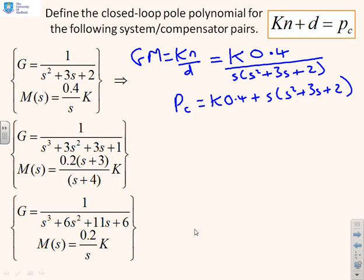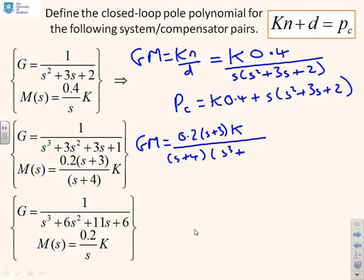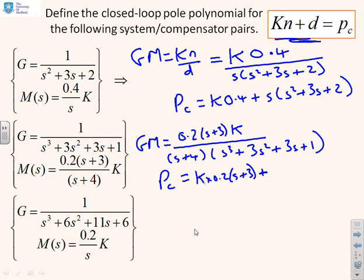If I do the same thing here, I can write GM equals 0.2(s plus 3)K over (s plus 4) into (s cubed plus 3s squared plus 3s plus 1). Therefore the closed loop pole polynomial is K times 0.2(s plus 3) plus (s plus 4) into (s cubed plus 3s squared plus 3s plus 1).